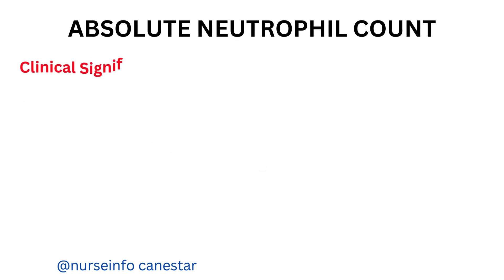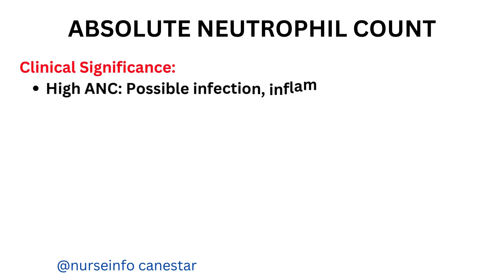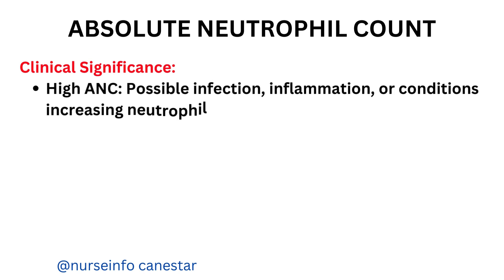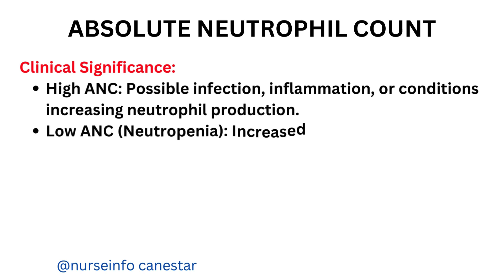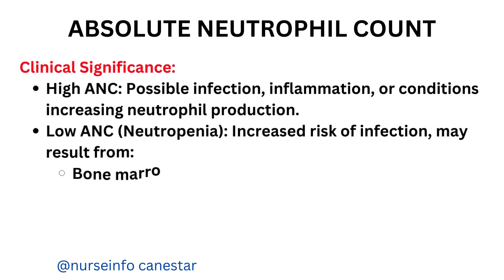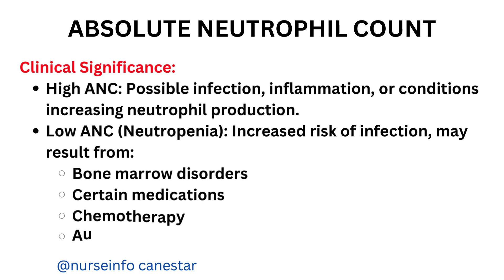Clinical significance: A high ANC may indicate possible infection, inflammation, or conditions increasing neutrophil production. A low ANC indicates neutropenia with increased risk of infection, and may result from bone marrow disorders, certain medications, chemotherapy, or autoimmune diseases.